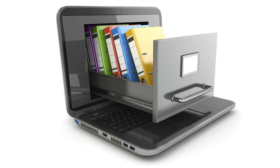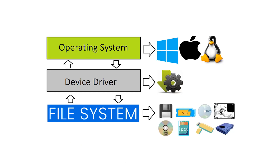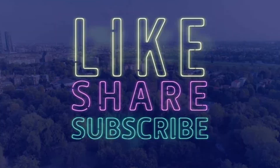File system is also called a storage system. All software applications and their application-specific files are stored in the file system only. Database files are also stored in the file system. File system writes the file to a physical hard disk in its raw format. Operating systems communicate with file systems using software drivers.